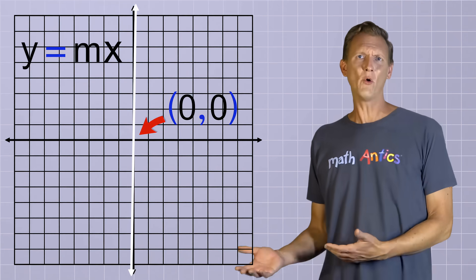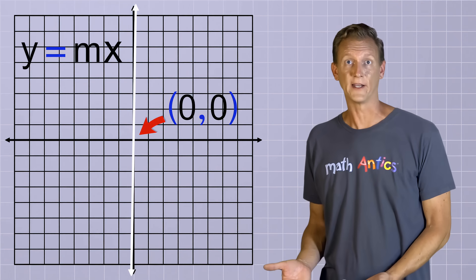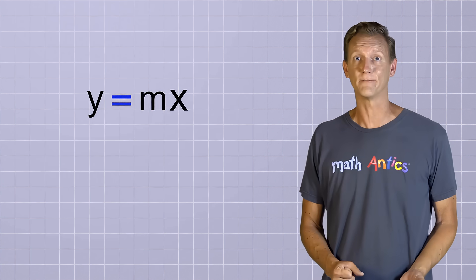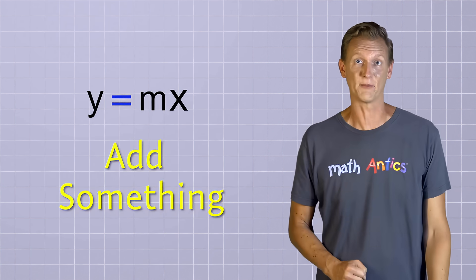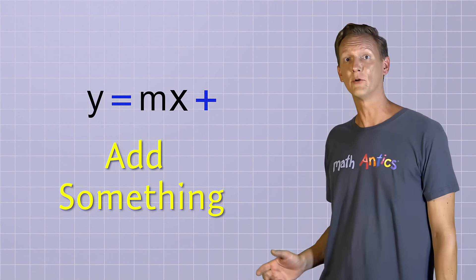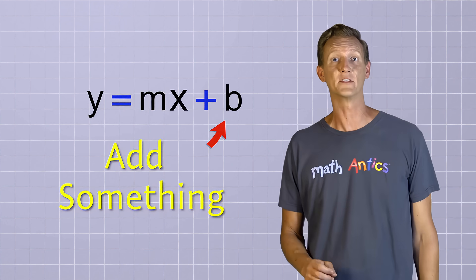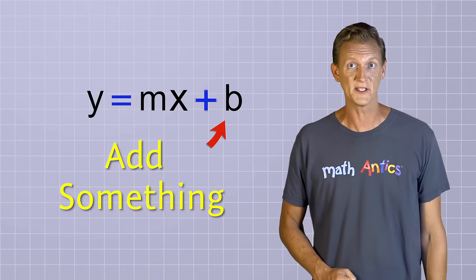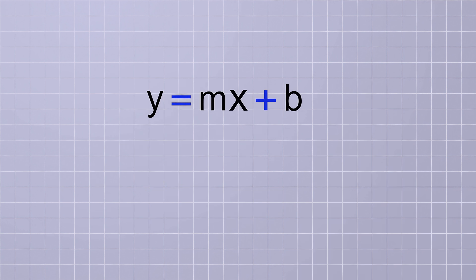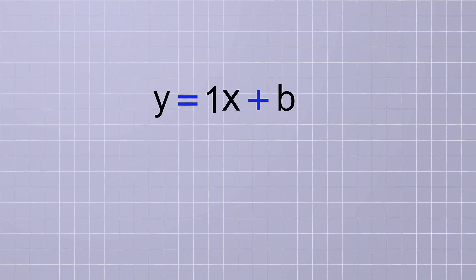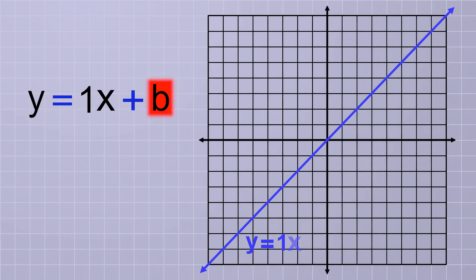But what if we don't want to be limited to lines that pass through the origin? No problem — all we have to do is add a variable called b to the end of our equation, giving us y equals mx plus b. To see what effect this new variable has, let's set m back to 1 and keep it there while we try out different values for b. We'll also leave the graph of y equals 1x on the coordinate plane as a reference to see how it compares.